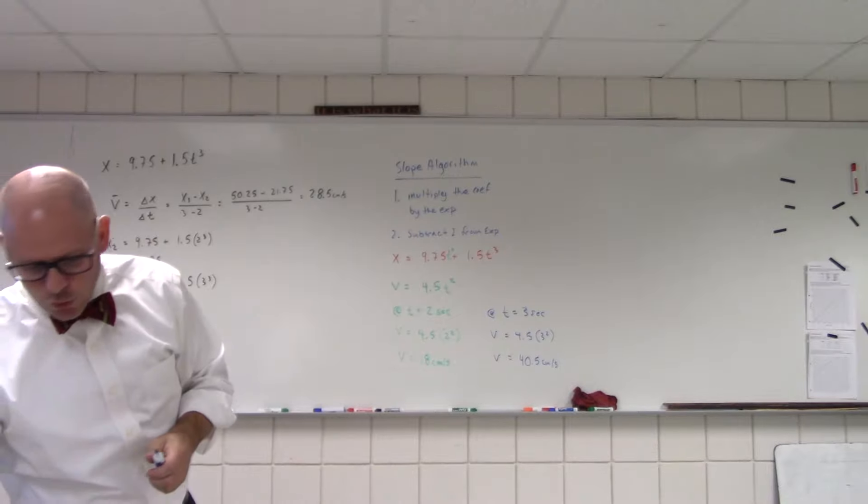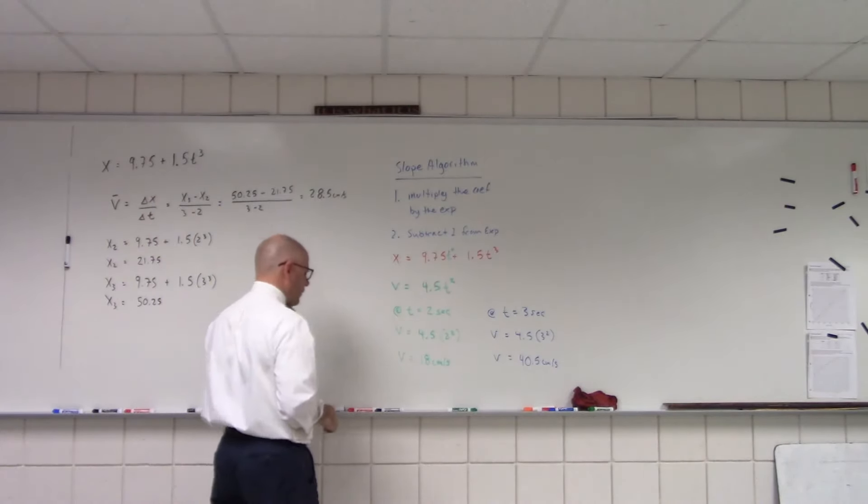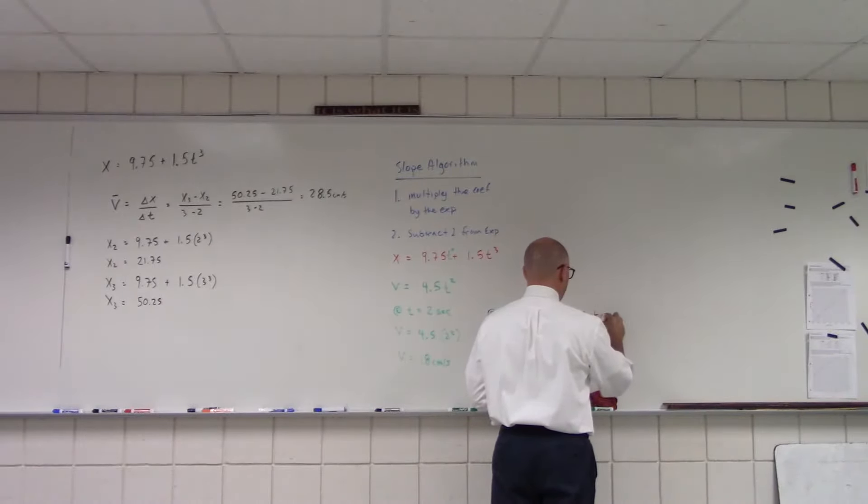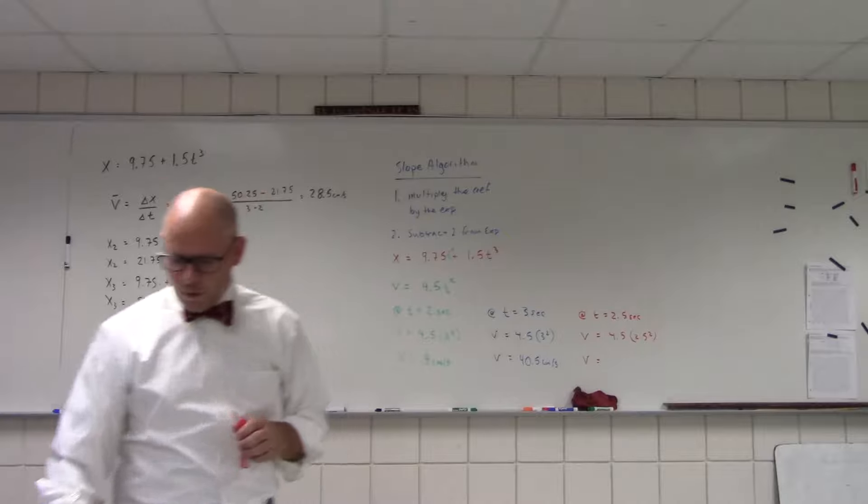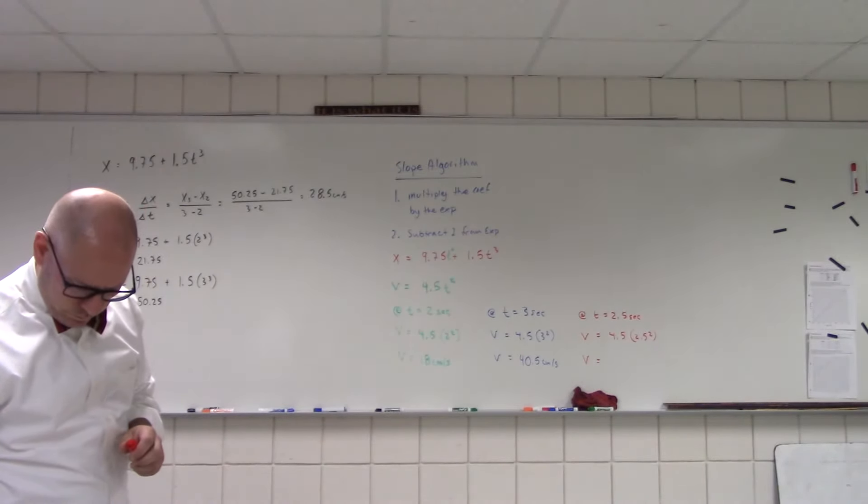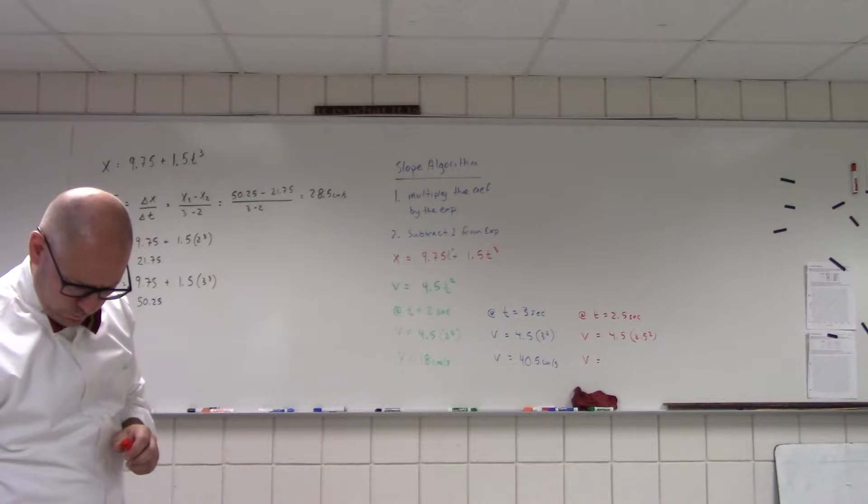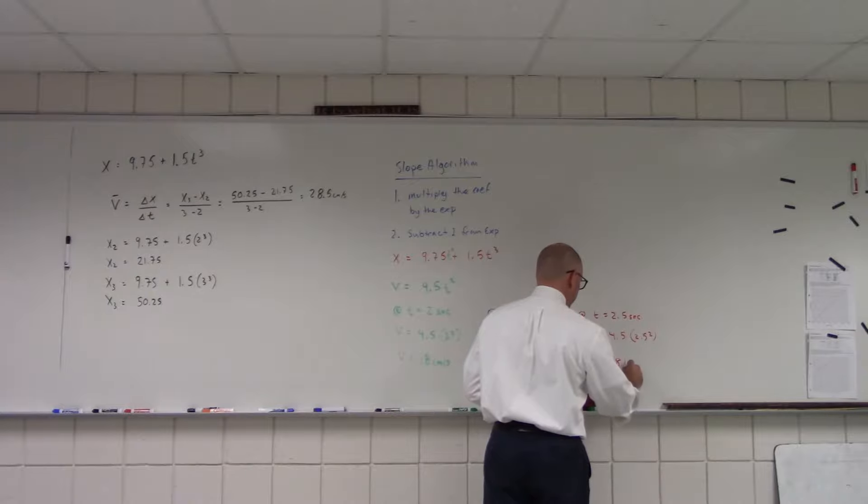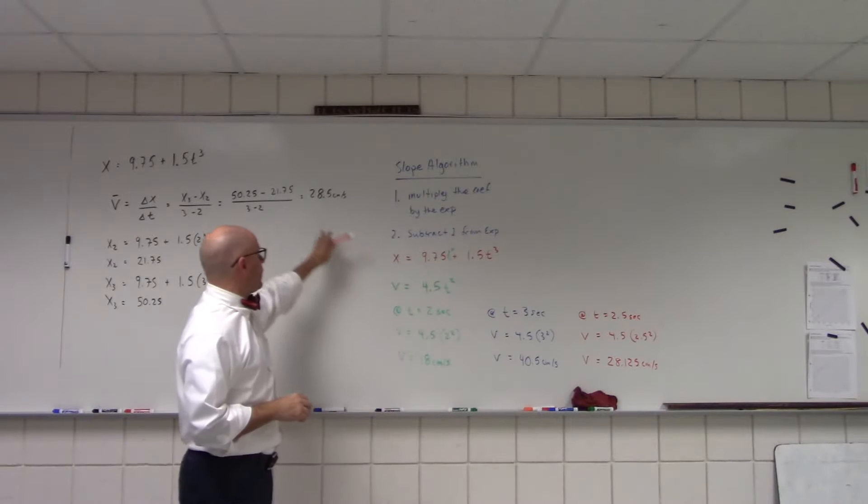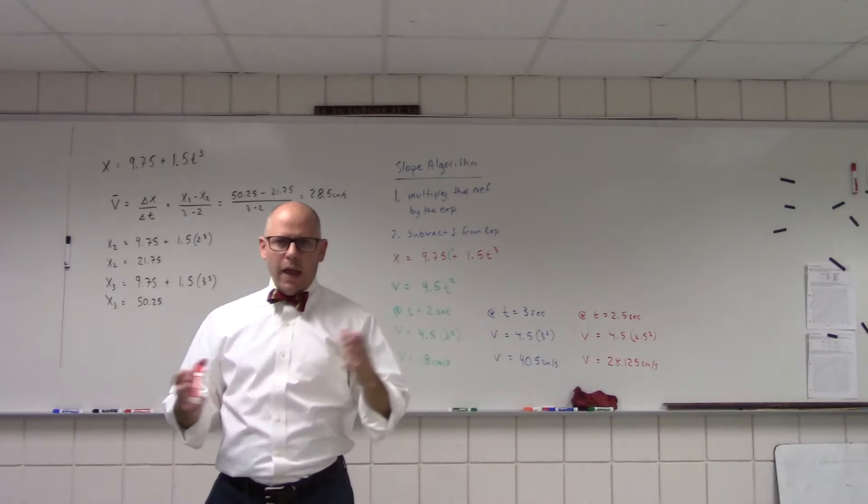Now, we want to do instantaneous velocity at 2.5. Okay. Bear with me. Let me check my calculator. So, in the middle, it makes sense that the average should be close to the instantaneous halfway through.